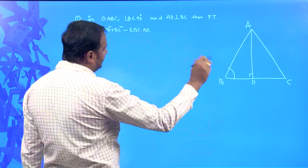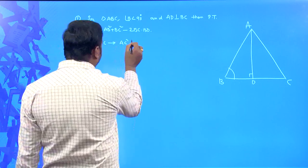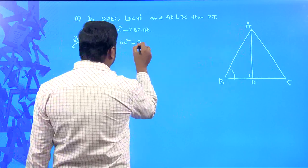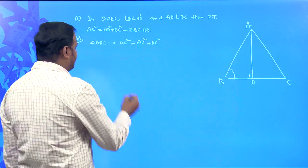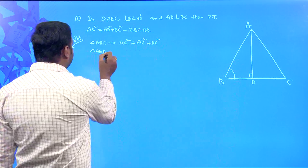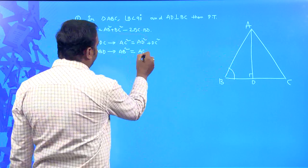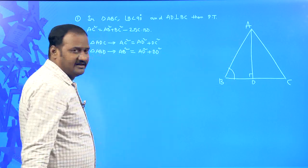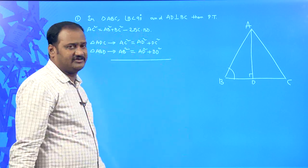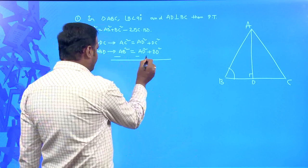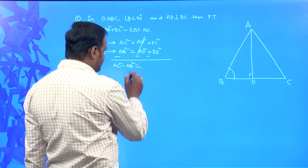Considering triangle ADC: AC² = AD² + DC². From triangle ABD: AB² = AD² + BD². In our result there is no AD term, so to eliminate AD we subtract one equation from the other: AC² − AB² = DC² − BD².